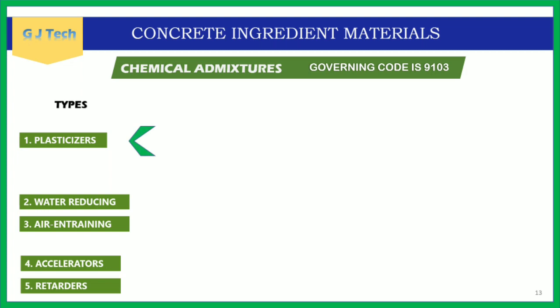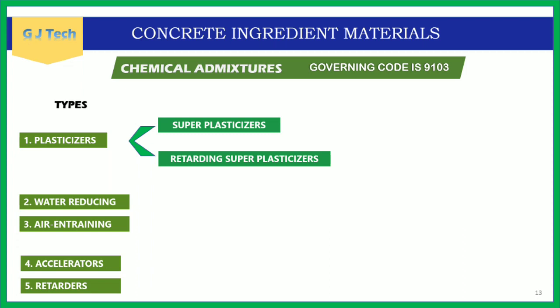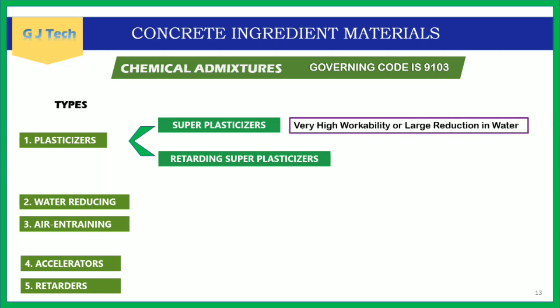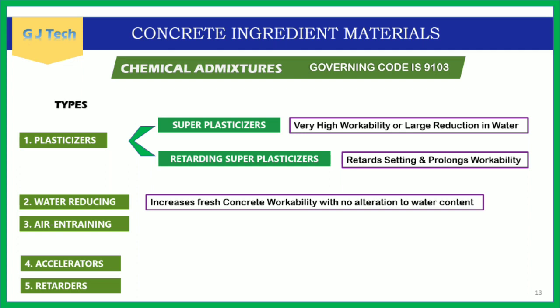Plasticizers are further available as super plasticizers and retarding-type super plasticizers. Super plasticizers induce very high workability by reducing water content up to 30 percent. Retarding super plasticizers are used when there is a requirement to retard the final setting time and prolong workability — for example, when concrete needs to be transported before casting, which takes time during which concrete tends to lose workability or set early.